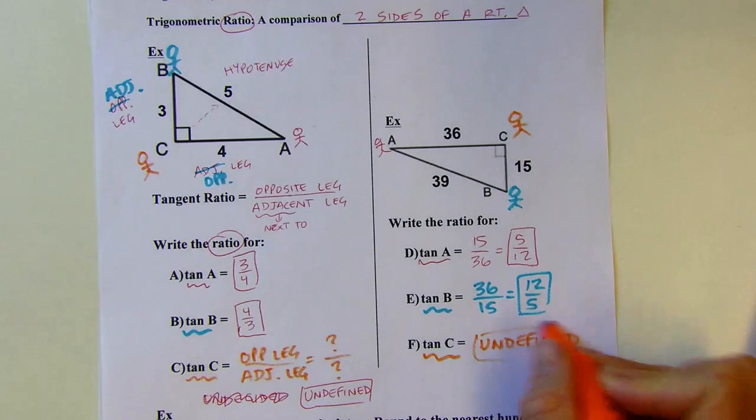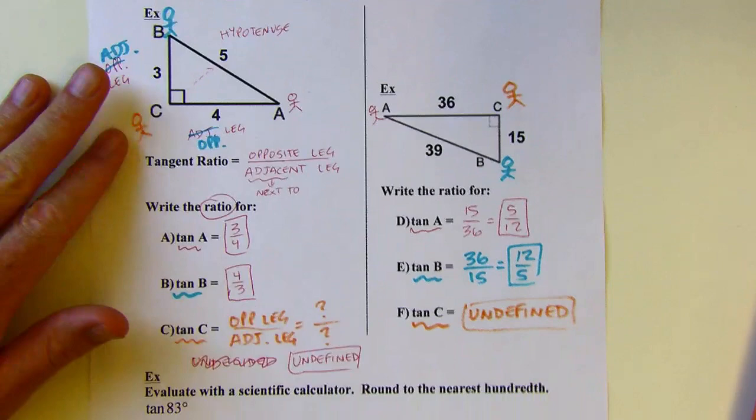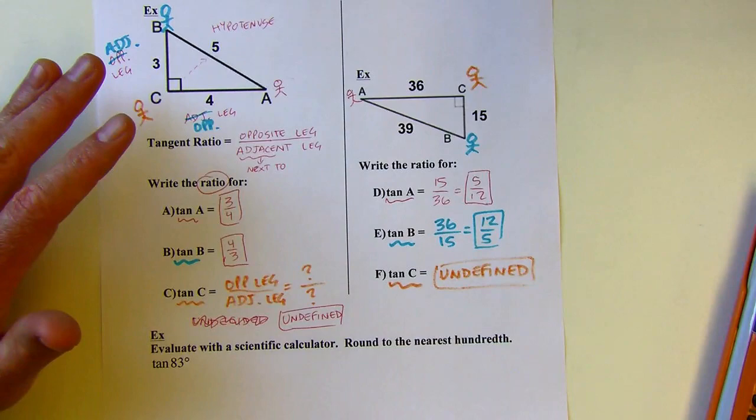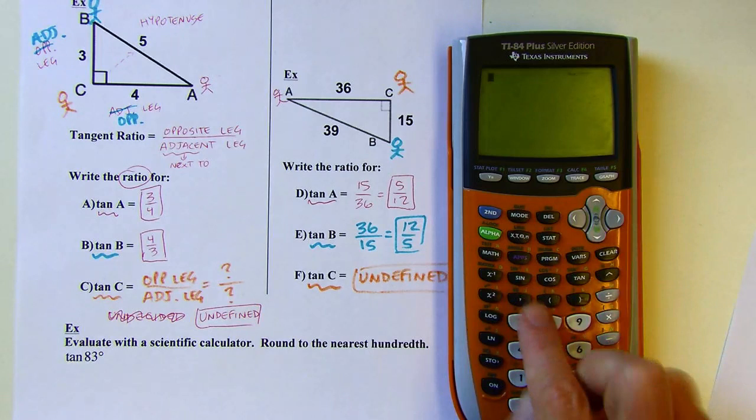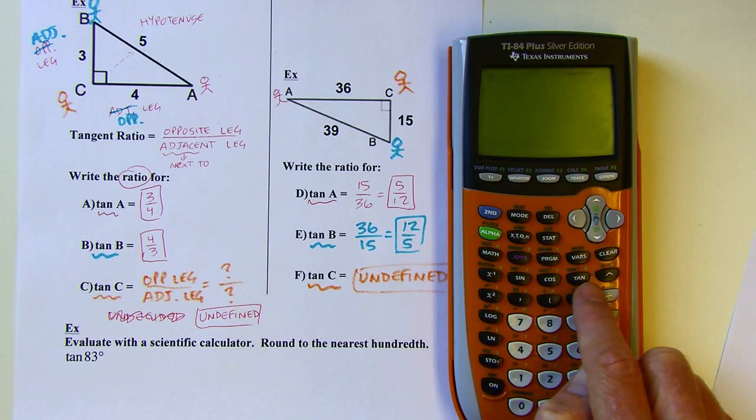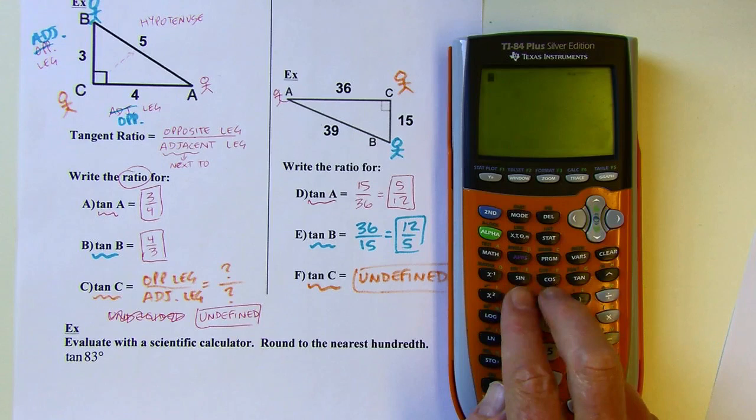Now let's move into the world of calculators. You're going to need a scientific calculator. You can probably use your phone as a scientific calculator. How do you know something is a scientific calculator? You want to find a calculator that has sine, cosine, and tangent buttons. We're only going to use tangent for now, but we'll be using these two very soon. You can find them online very easily if you don't have a calculator handy.